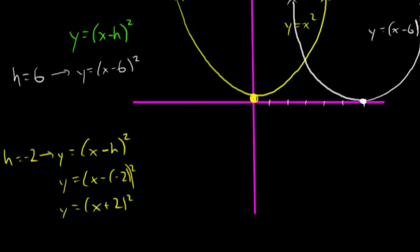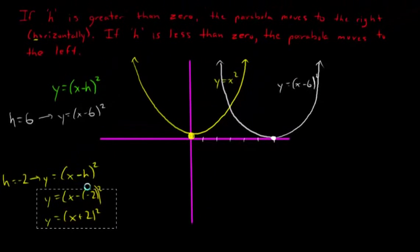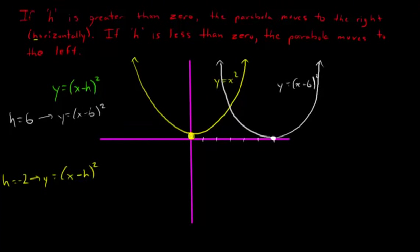So h is probably going to throw you for a loop pretty often because it's going to look kind of like the opposite sign of what you expect it to be. So try not to get tripped up by that, it's just something you have to kind of memorize. So if h equals negative 2, then it's going to be y equals x plus 2 squared. So looking at this quadratic relation, we can see that h is negative 2,